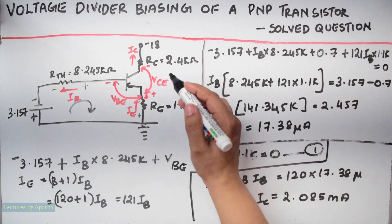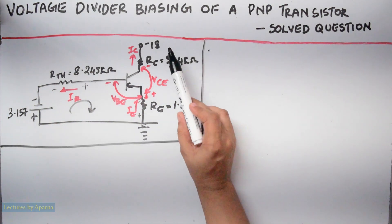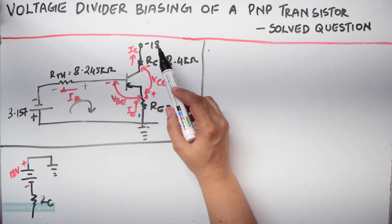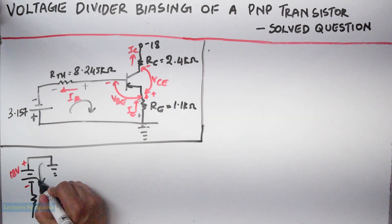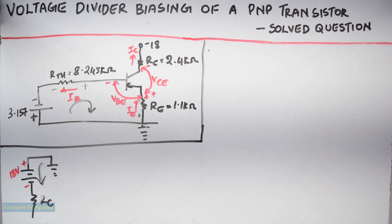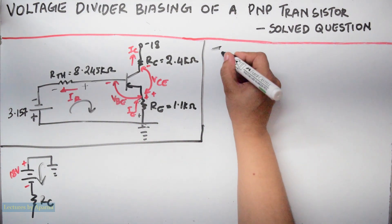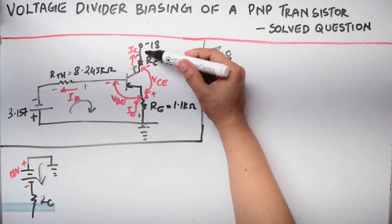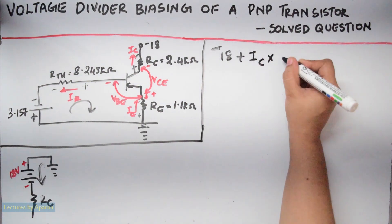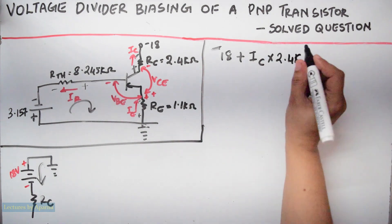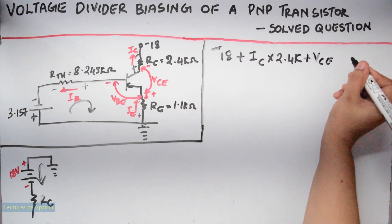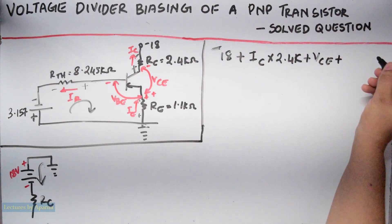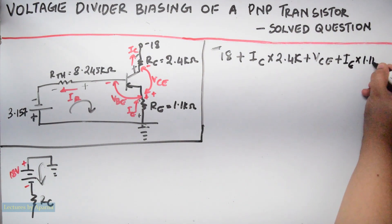Now we have to find VCE. For that, consider the output section. Minus 18V is the negative terminal of 18V connected to RC, that is why it is given as minus 18V. Going in this direction from plus to minus is a decrease in potential, so write minus 18. When we reach the next element, current flows from higher to lower potential, so going in this direction is an increase: plus IC times RC (2.4 kilohms). When we reach the next node it is an increase: plus VCE. Again current flows from higher to lower, so plus IE times 1.1K equals zero.